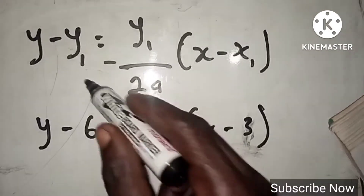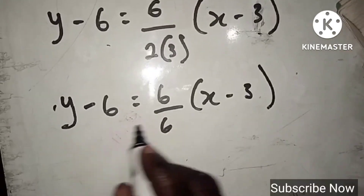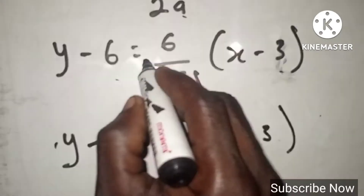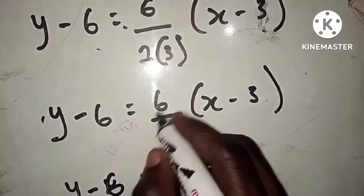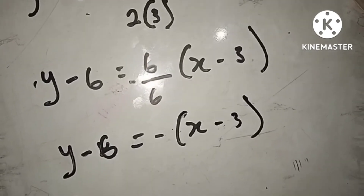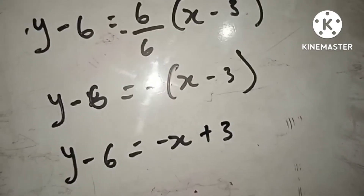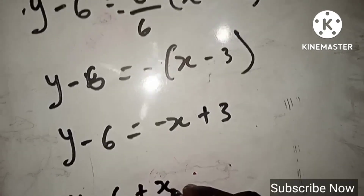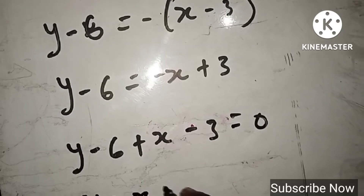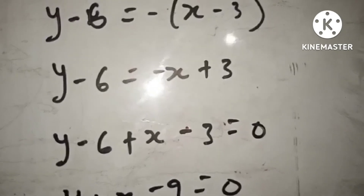Substituting y₁ equals 6, x₁ equals 3, and a equals 3 into the normal equation: y minus 6 equals negative 6 over (2 times 3) into (x minus 3). The 6 and 2 times 3 cancel, giving y minus 6 equals negative (x minus 3). Expanding: y minus 6 equals negative x plus 3. Sending everything to one side: y plus x minus 9 equals zero. This is the equation of the normal.